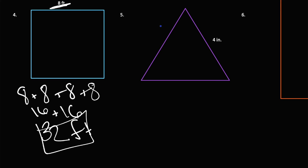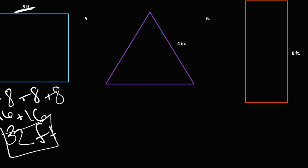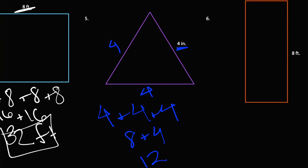And again we have a triangle — this one's also an equilateral triangle, so all the sides are going to be the same. Since one side is 4, we know that all sides are 4. So we can do 4 plus 4 plus 4. 4 plus 4 is 8, and 8 plus 4 is 12. Since this is in inches, it would be 12 inches — that's our perimeter.